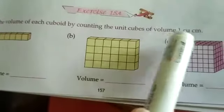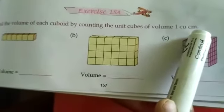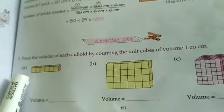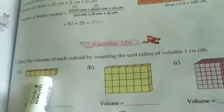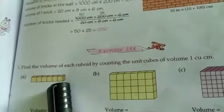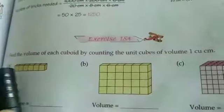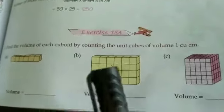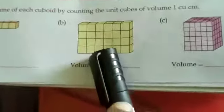Now come to the exercise part — Exercise 18A. Find the volume of each cuboid by counting the unit cubes of volume 1 cubic centimeter. Here the height is 1 cm, and the length is 6 cm (counting 1 through 6), and the breadth is 1 cm. So 6 × 1 × 1 equals 6 cubic centimeters. In that way, you will find the cubic centimeters for the other cuboids as well.